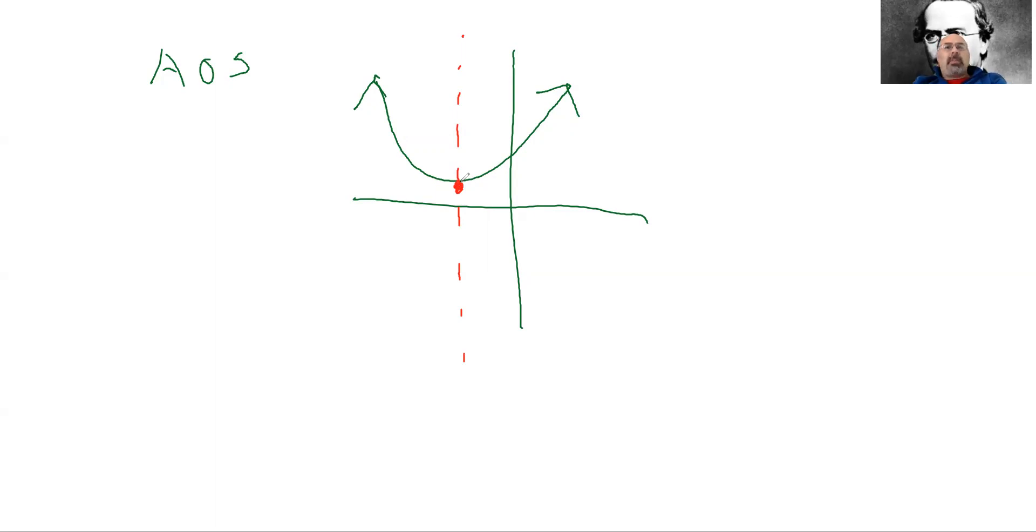All right, and what's special about the axis of symmetry is both sides of the axis of symmetry are mirror images of each other. And this is a really important line.